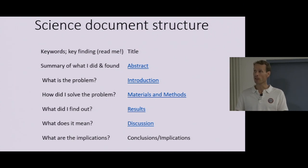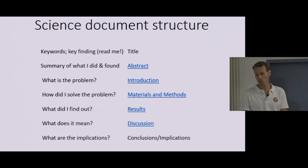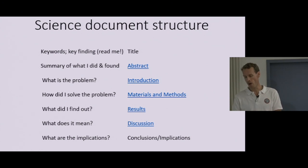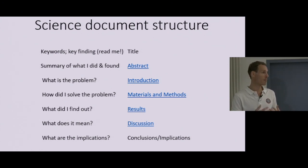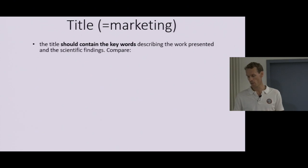An abstract is simply the summary of what you did and what you found. The introduction describes what the main problem is and how you solved that problem. Results: what did you find. The discussion is about what does it all mean. Conclusions: what are the implications of that work? We will go through all of these sections with examples.